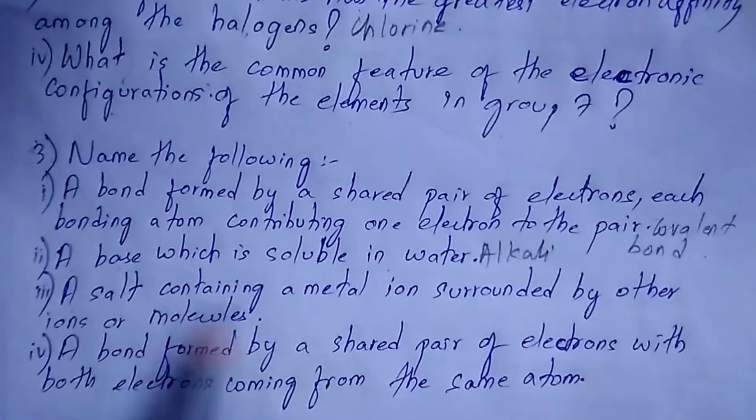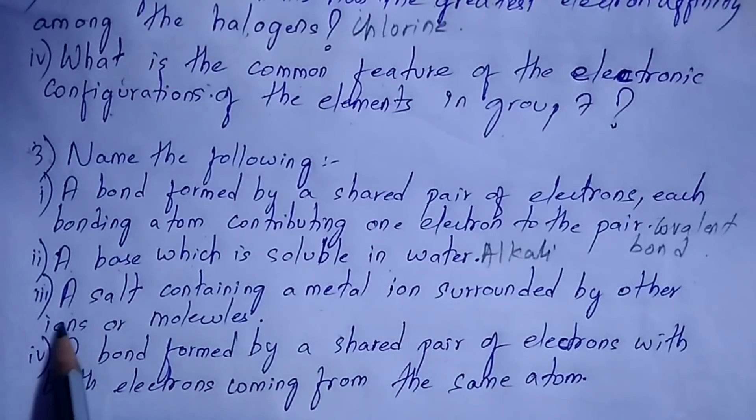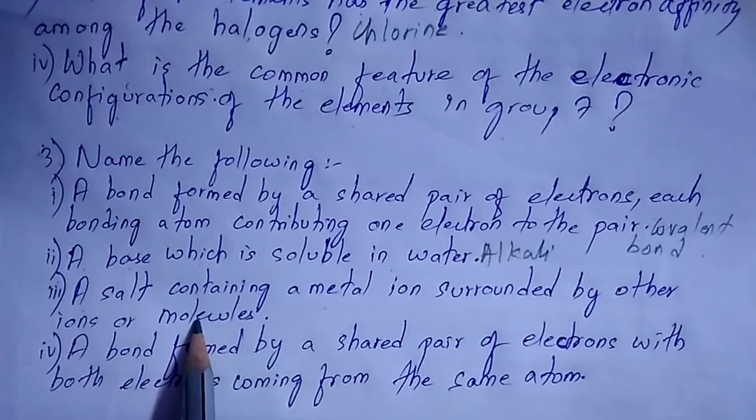Next: a salt containing a metal ion surrounded by other ions or molecules. It is complex salt.